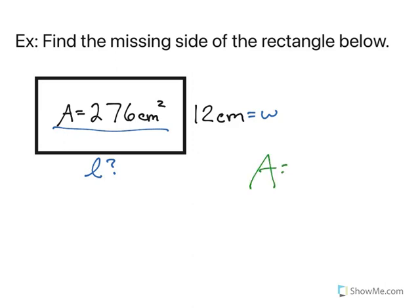Recall, the area is length times width. If we substitute in what we know, the area is 276, the length is missing, but the width is 12.